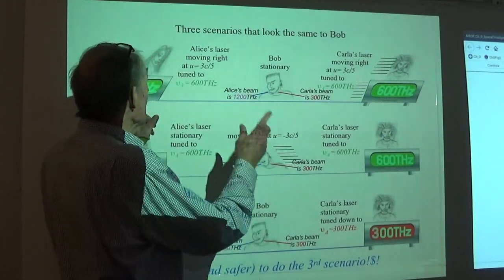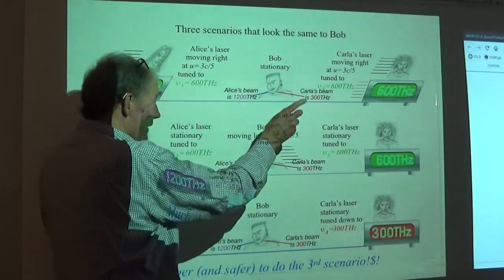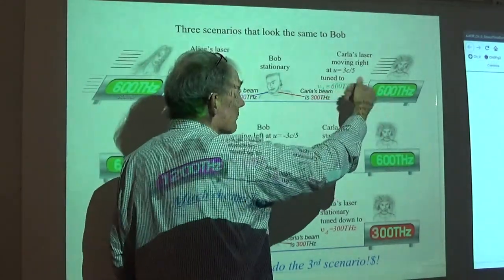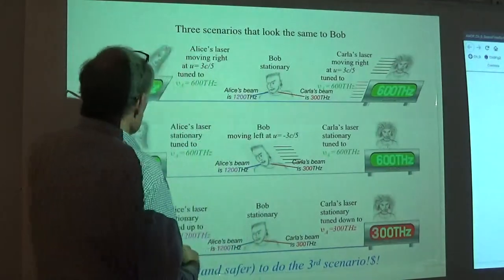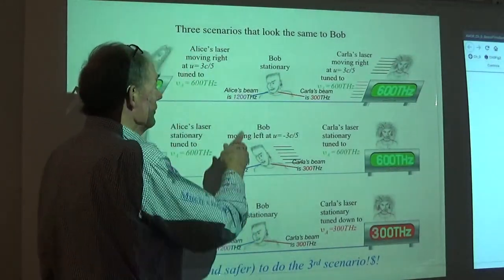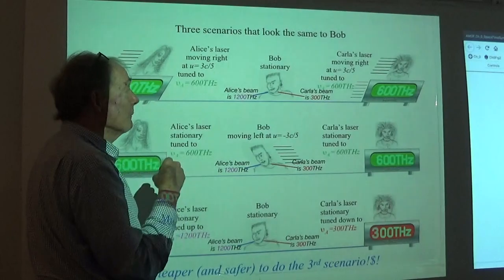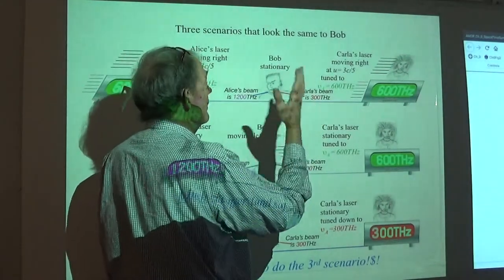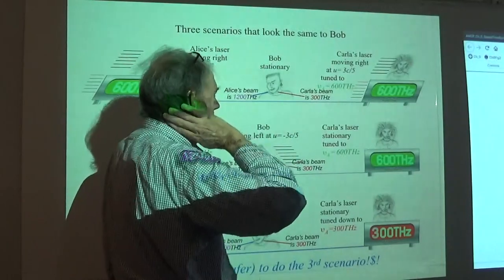She sees Alice's beam of 1200. That's a horrible UV. Better be wearing protective equipment. But 300, oh, that's just a nice warm breeze. Thank you. Carmen. The other way to do it is get Bob off his ass and make him go three-fifths in the other direction. Pretty much the same thing.